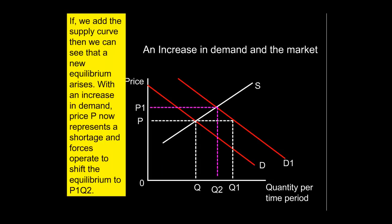What would be the outcome — the change in equilibrium position — if there was an increase in demand? Including the supply curve S, at the existing price OP, the quantity supplied would be OQ. But with the new demand curve D1, the quantity demanded is now OQ1 — greater than OQ. We've got a shortage in the market, and there are forces pushing up both the demand and supply curves to get us to a new equilibrium of P1 and Q2 — higher price and higher quantity.